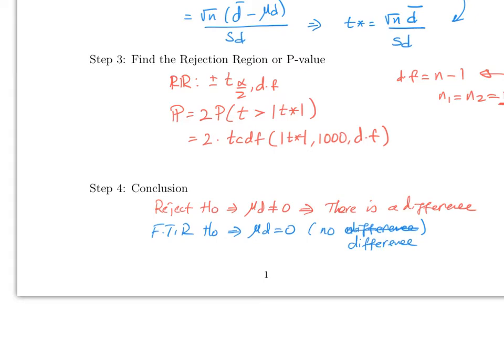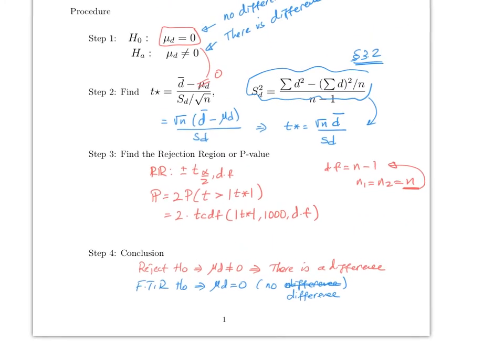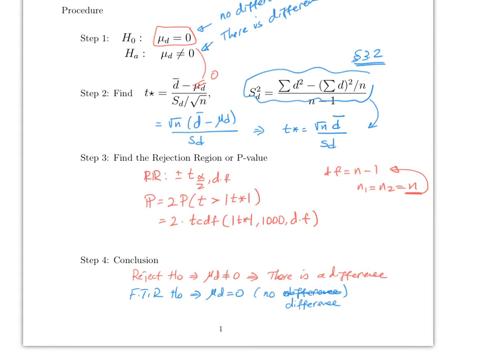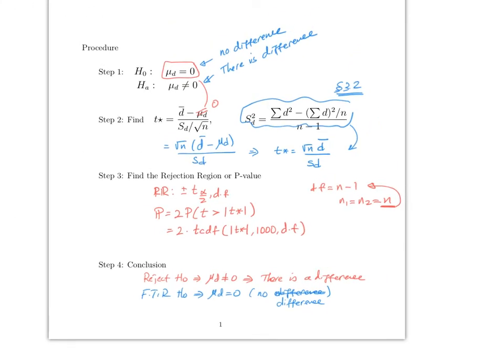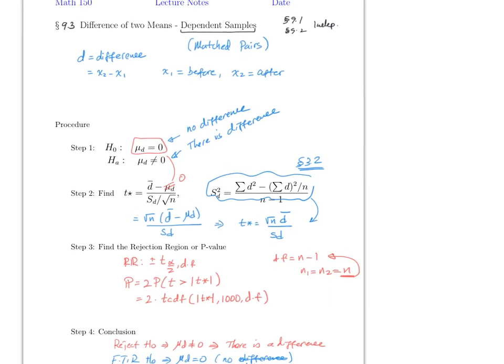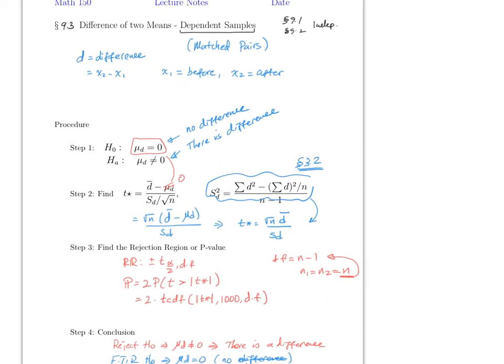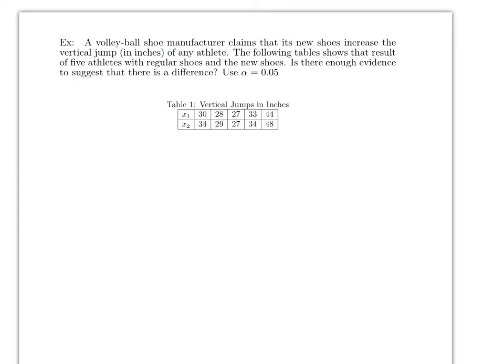This is very similar to Section 8.2 and also to Section 9.1. The extra step now is that you must figure out D-bar and S_D before you start — in Section 8.2 those values were usually given, but now you have to find them first.